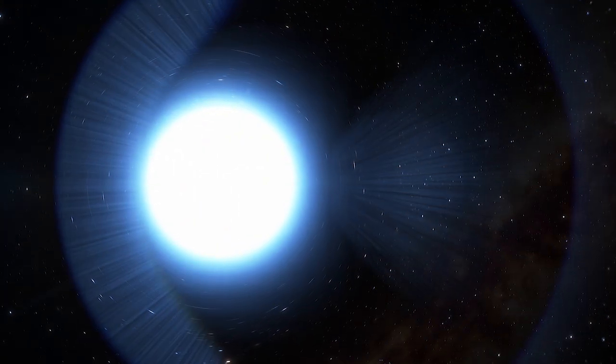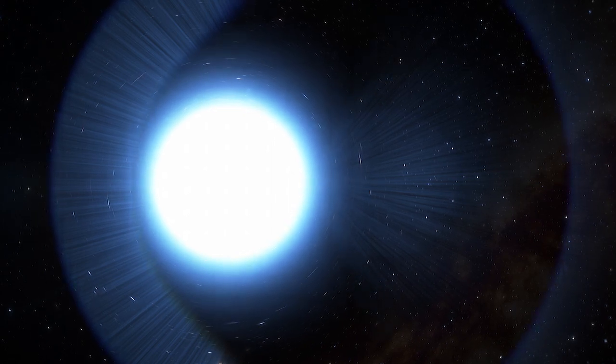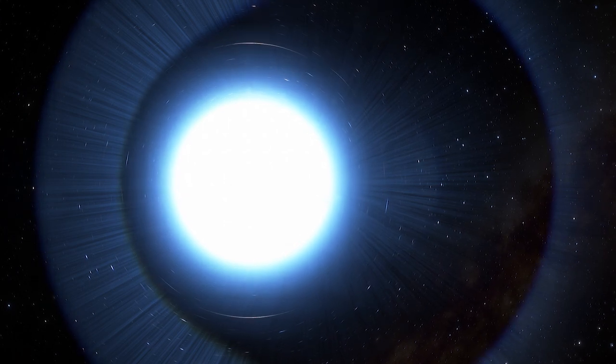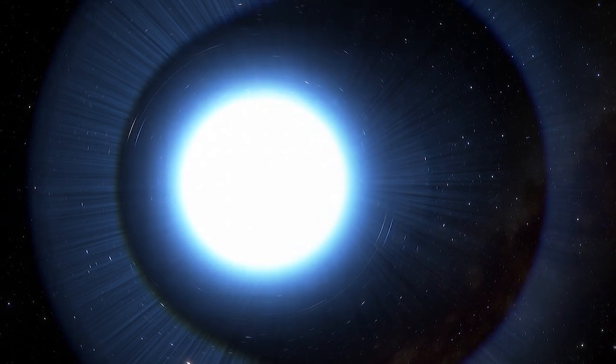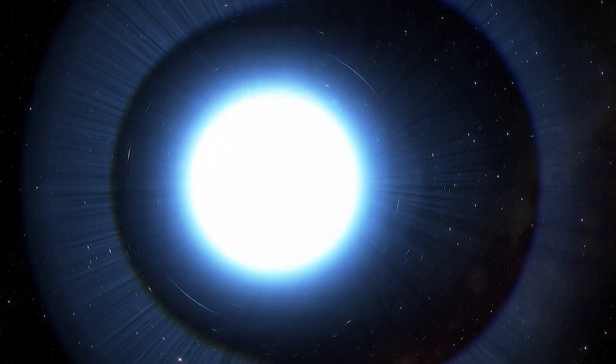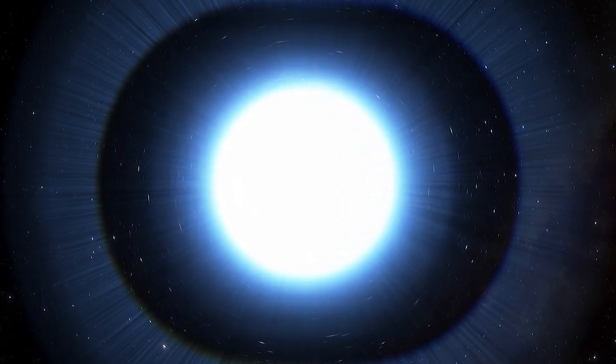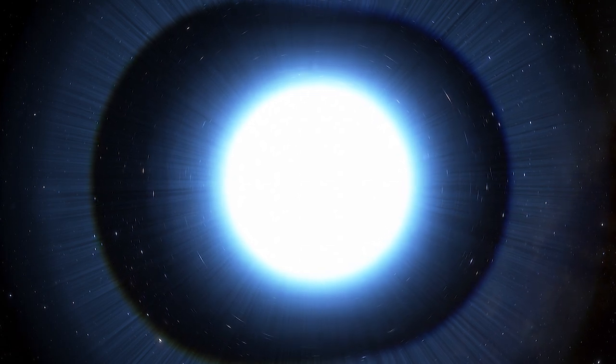On average, gravity on a neutron star is 2 billion times stronger than gravity on Earth. In fact, it's strong enough to significantly bend radiation from the star in a process known as gravitational lensing, allowing astronomers to see some of the backside of the star.